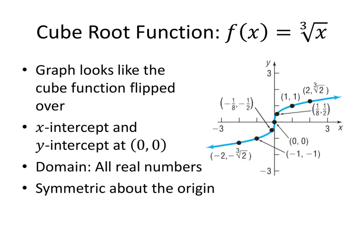What about the cube root function? The square root graph looked like the graph of x squared, so it shouldn't be too surprising that the cube root graph looks a little something like the x cubed graph. The graph of the cube root looks like the graph of x cubed flipped over. The x-intercept and the y-intercept are both at the origin. The domain is all real numbers — we can't take the square root of a negative number, but we can take the cube root of a negative number. This graph is symmetric about the origin; if we were to rotate it a half turn, the graph would look the same.